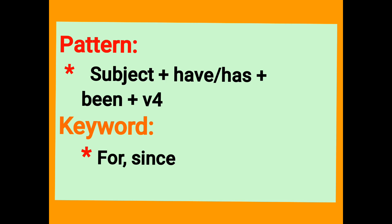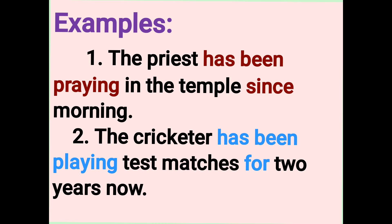The pattern for present perfect continuous tense uses Have or Has plus Been plus V+ing. The two key words are for and since. We can make sentences in present perfect continuous tense using them. Here is the first example: The priest has been praying in the temple since morning.